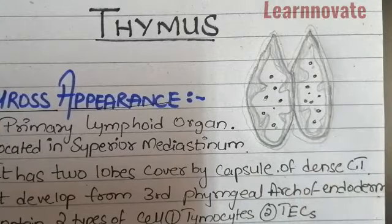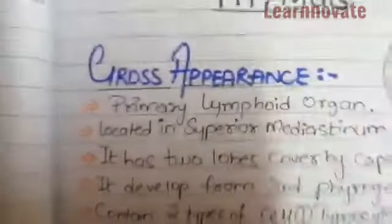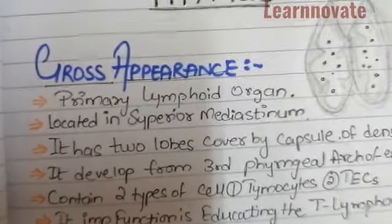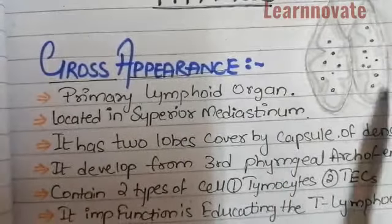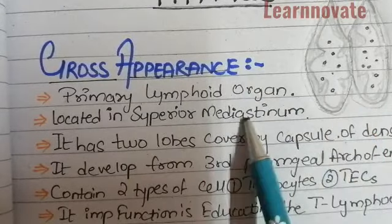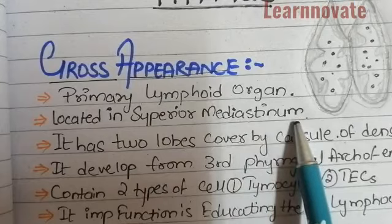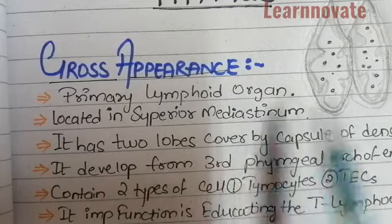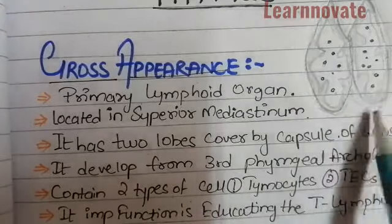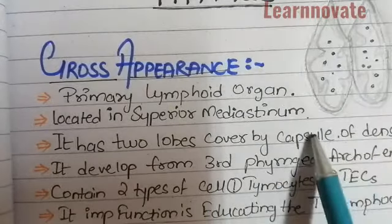The thymus is a primary lymphoid organ and is important for the immune system. It is located in the superior mediastinum, above the heart at the level of the thoracic cavity. It has two lobes that are covered by a capsule of irregular dense connective tissue.